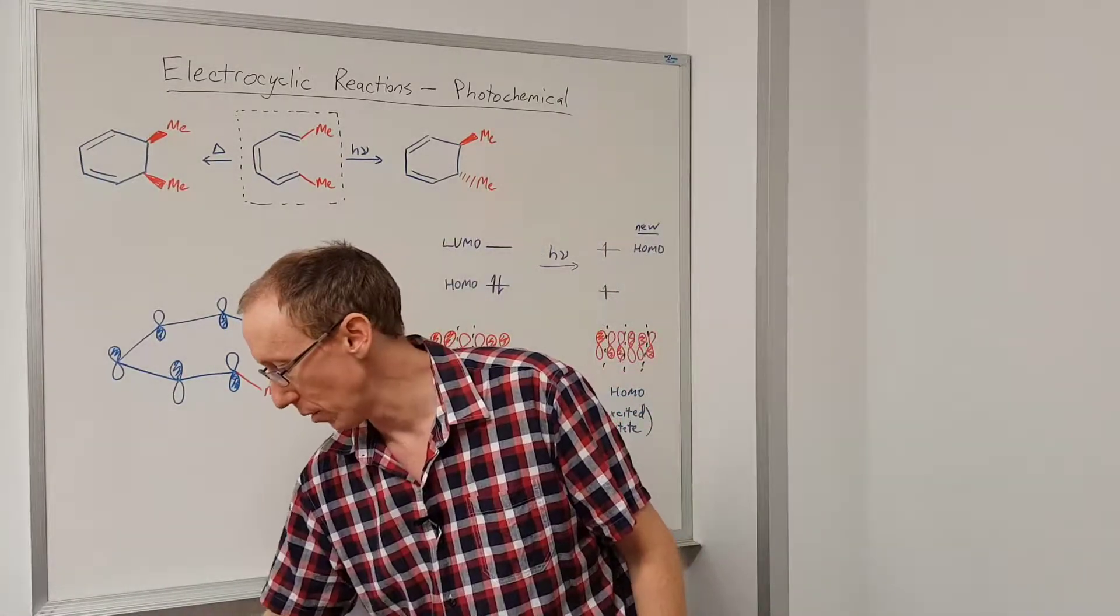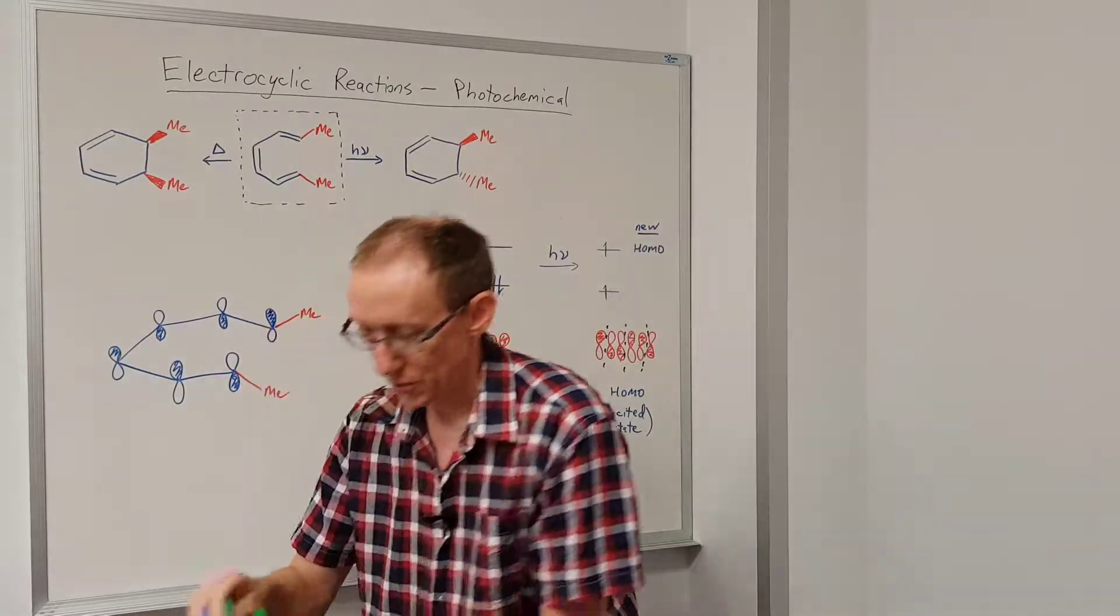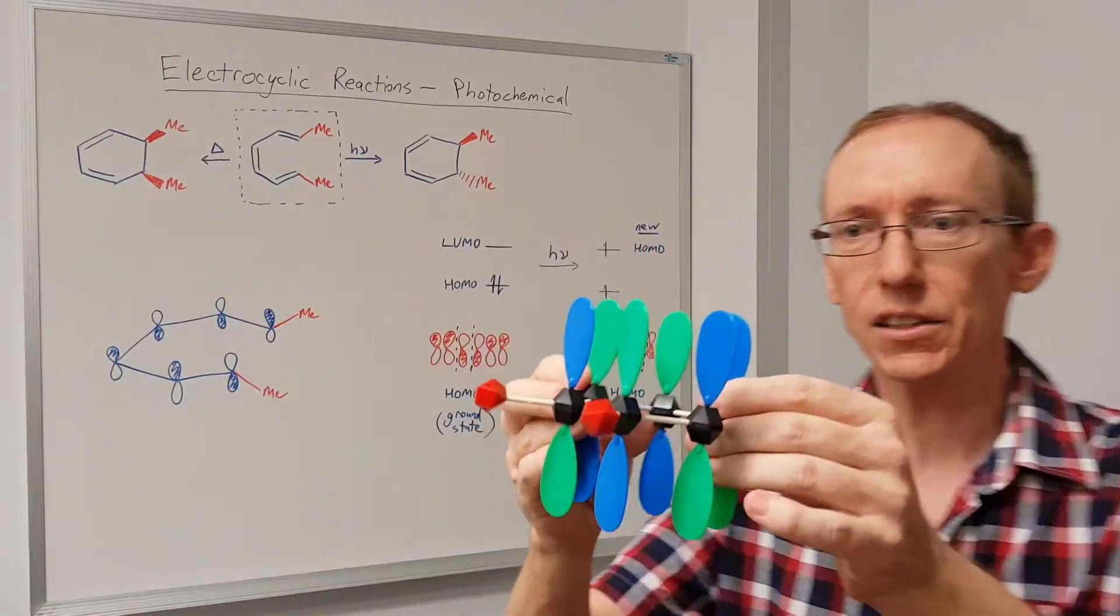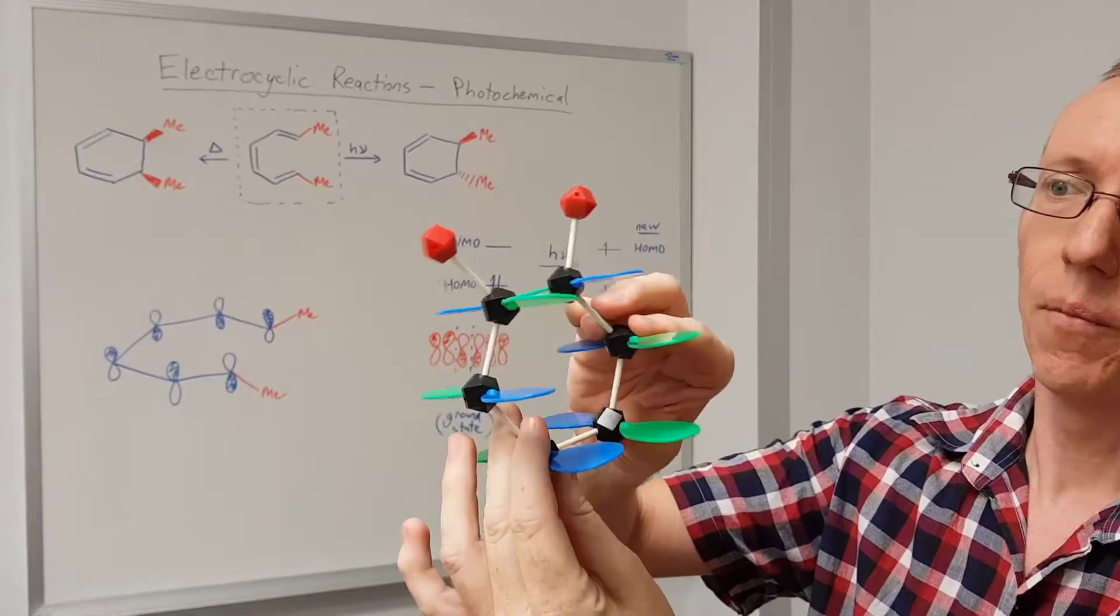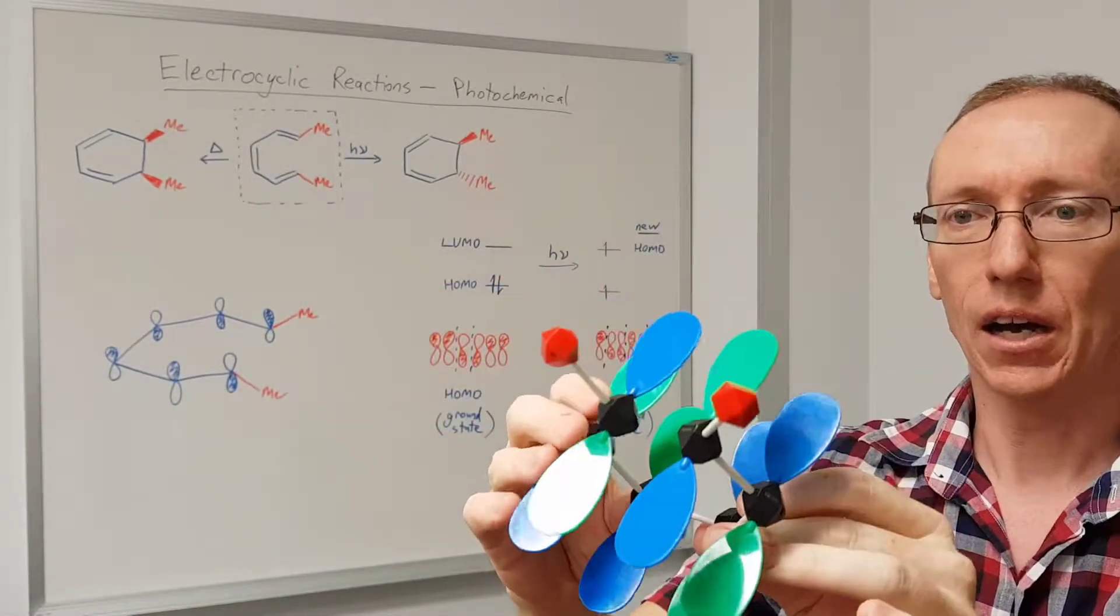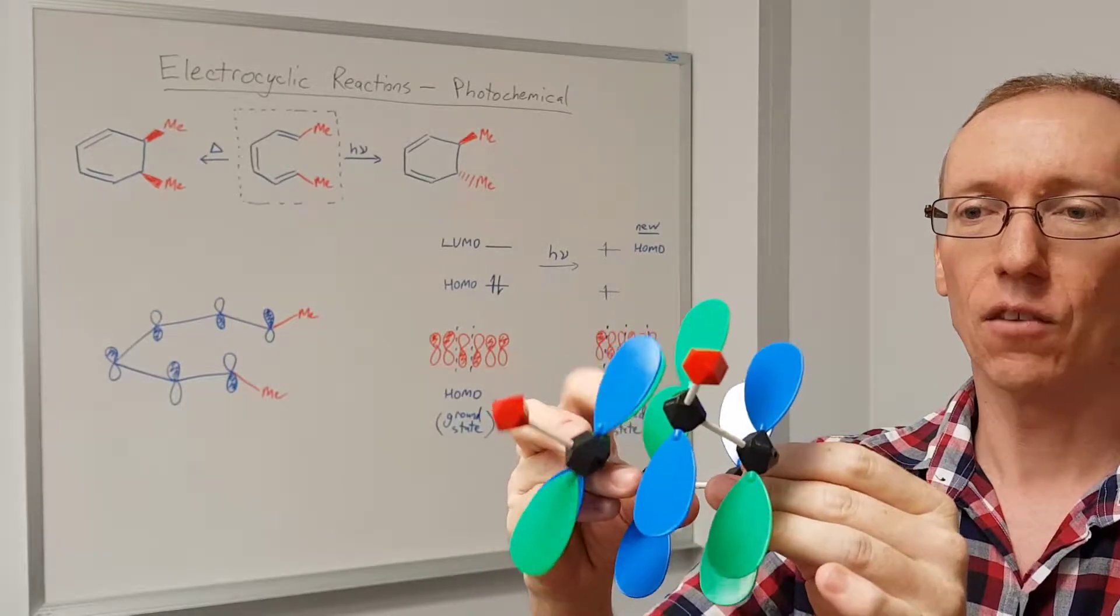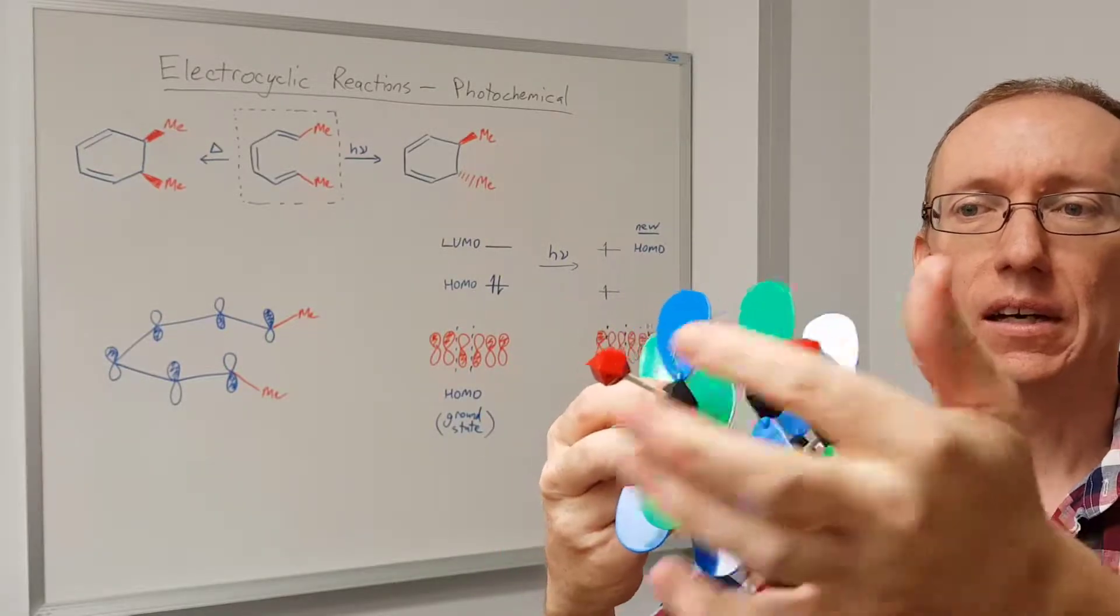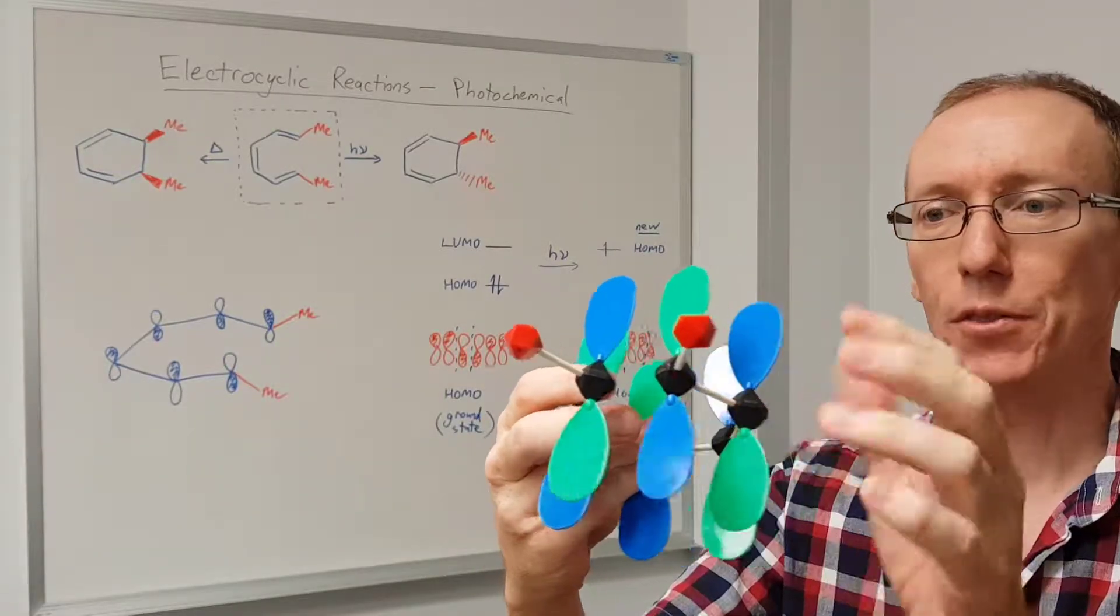So once again, I've got a model for this. So I've got a model of the hexatriene with that new excited state HOMO shown, and these red atoms signifying the methyl groups.